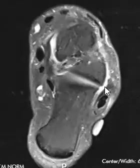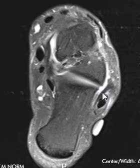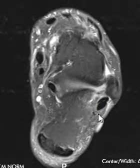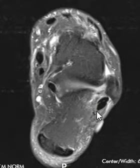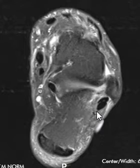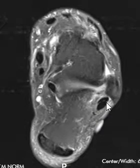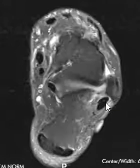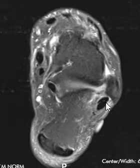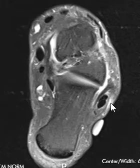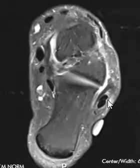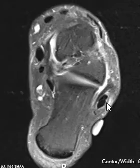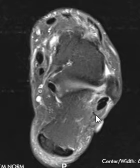This is the calcaneofibular ligament on the medial margin — this long band here, if you're wondering. This sometimes can cause crowding of the peroneal tunnel, especially when the muscle belly is lower and bigger. It can crowd these peroneus tendons and cause tenosynovitis, and sometimes tendinopathy and tearing. This patient has maybe a little bit of tenosynovitis, but it's very subtle findings.